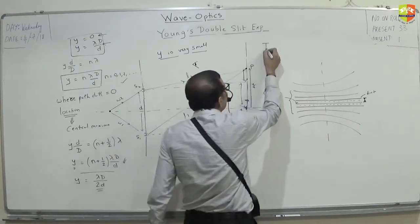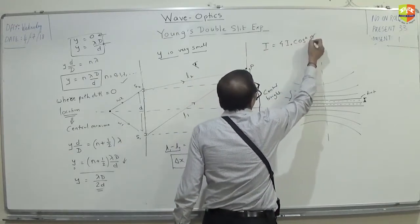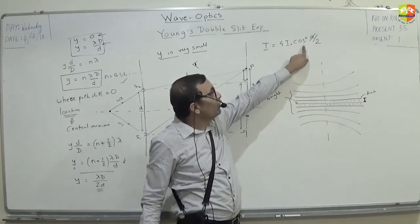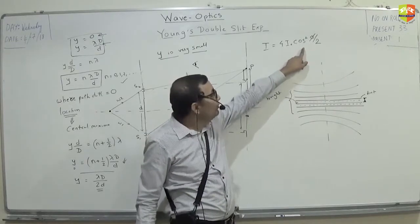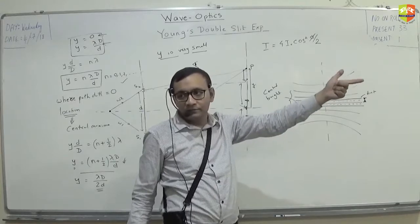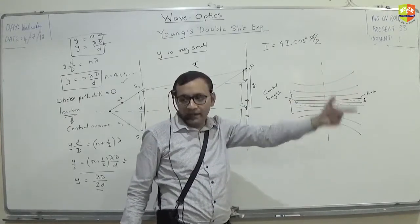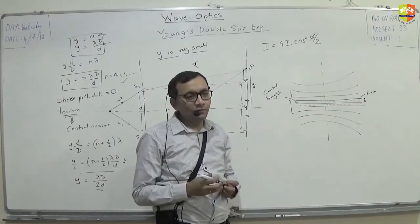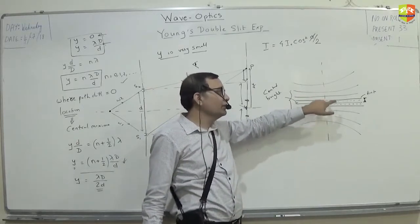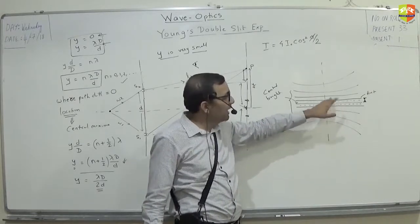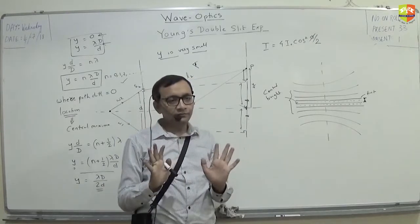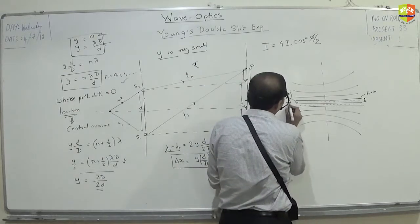Intensity is 4I₀·cos²(φ/2). There will be a fixed location where cos²(φ/2) becomes zero, and a fixed location where cos²(φ/2) becomes one. Between zero and one there are so many intermediate points. Between maxima and minima there are many in-between points. Dark will be exactly in between the two bright, and between dark and bright the intensity will gradually change.